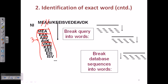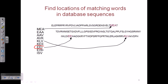After forming the words, we match them with the database sequences. There are two strategies: break the query into words, break the database sequences into words, then look for matches. We find the locations of matching words in the database — for example, EEI matches at one location, KLB at another, and MEA at another in the database sequence.